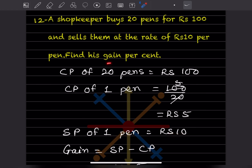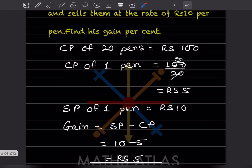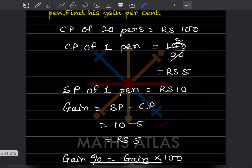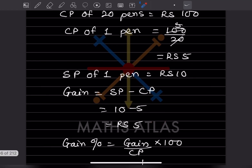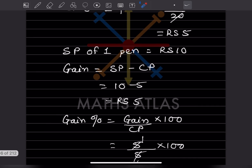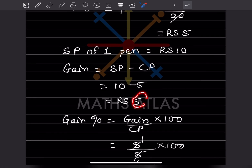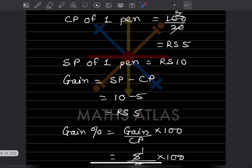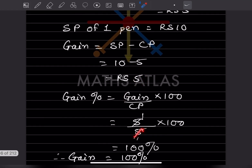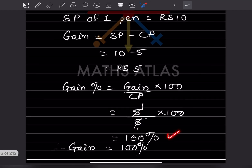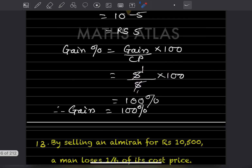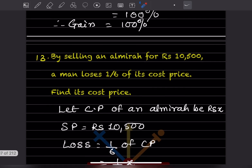The gain formula is SP minus CP, which is 10 minus 5 = ₹5. The gain percentage is gain divided by CP into 100, so 5 ÷ 5 × 100 = 100 percent. The gain is 100 percent.